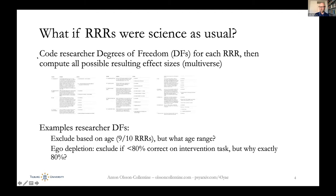You can do that in many, many different ways, and it's a protocol that Anton applied, automated, and used for all these labs within the different registered replication reports. What you can then do is you have a grid — that's the idea from the Belgian group — and it's called the multiverse because you combine all the different dimensions. We had a list of very common degrees of freedom and a list of more idiosyncratic degrees of freedom that were really well-tailored and applied to the specific study at hand.